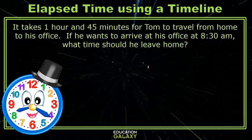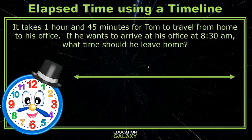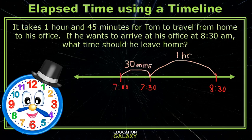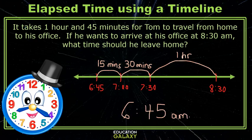Let's try one that we have to work backwards for. It takes 1 hour and 45 minutes for Tom to travel from home to his office. If he wants to arrive at his office at 8:30 a.m., what time should he leave home? In this problem, we know that we want to end at 8:30. So if we go backwards 1 hour, it will be 7:30. Then back 30 minutes would take us to 7 o'clock. And 15 more minutes will take us to 6:45. So our answer is 6:45 a.m.